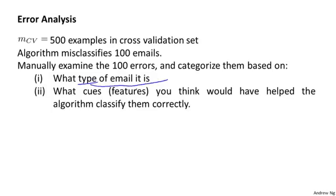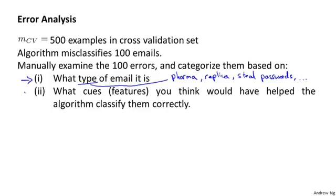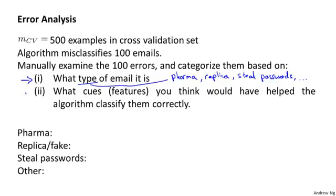Specifically by what type of email it is: if I look through these 100 errors, I might find that the most common types of spam emails it misclassifies are maybe emails on pharmacies — basically emails trying to sell drugs — maybe emails trying to sell replicas like fake watches, maybe emails trying to steal passwords (also called phishing emails), and then other categories. I would go through and count up: maybe 12 are pharma emails, 4 are replica emails, 53 are phishing emails, and 31 are other types.